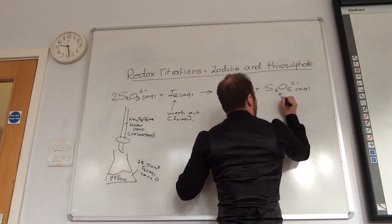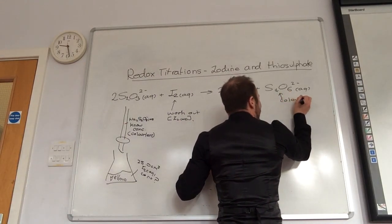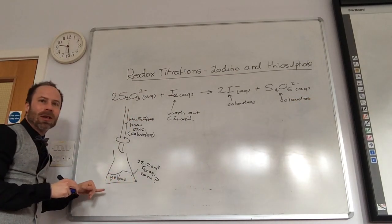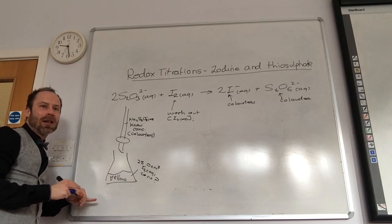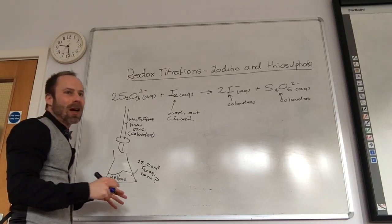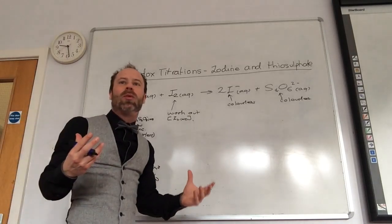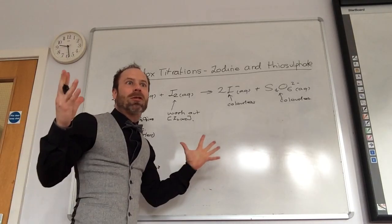What's going to happen is that this just goes from yellow to lighter yellow to lighter yellow to colorless, which is a bit of a naff end point. What do you want in an end point? You want a sudden change.